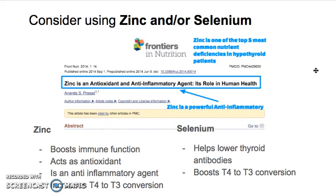Number three would be to consider using zinc or selenium. Both of these are very great nutrients for reducing inflammation and boosting immune function. Zinc can act as an antioxidant and anti-inflammatory agent in humans — a really great nutrient for patients with high antibodies. It educates the body between foreign substance and self-tissue, reduces oxidative stress, and increases T4 to T3 conversion. Selenium can specifically help to lower TPO antibodies by itself and also boost T4 to T3 conversion.